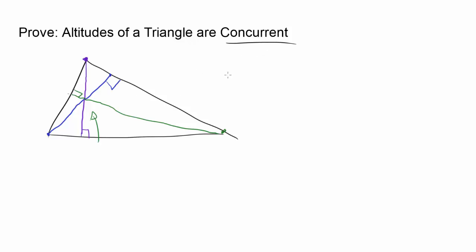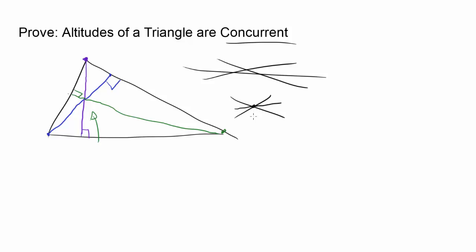You may ask: do they have to be concurrent? If we draw arbitrary lines like this, they are not concurrent — they do not meet at the same point. But do altitudes of a triangle have to be concurrent, and is it for every single case? Are there exceptions? It turns out the answer is yes — they are concurrent for every single possible non-degenerate triangle that you can draw. So we are going to prove this.